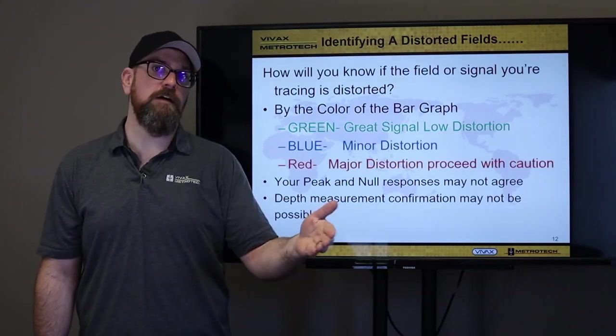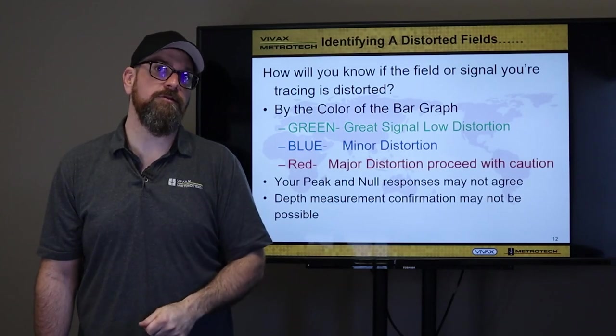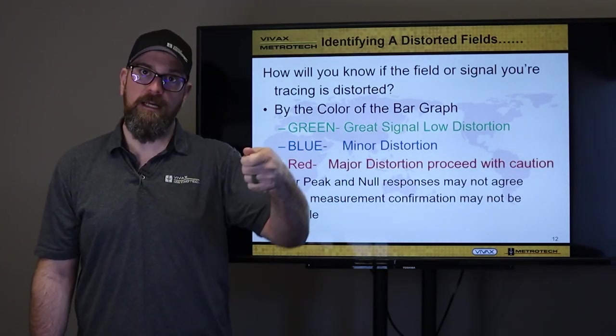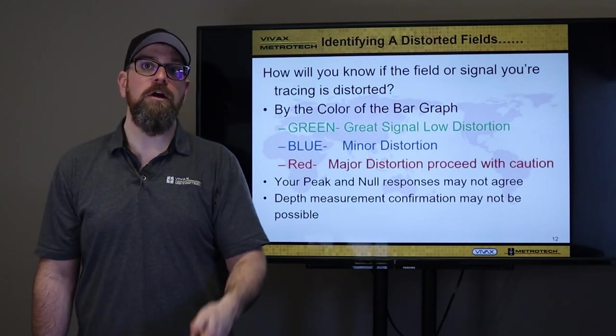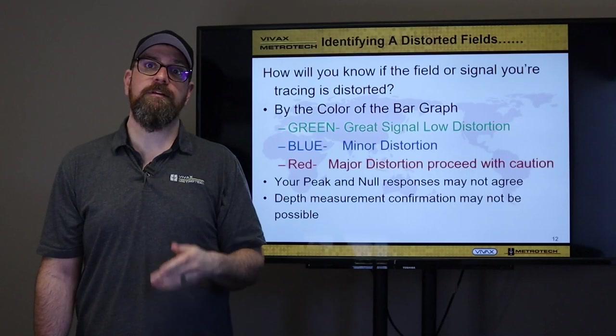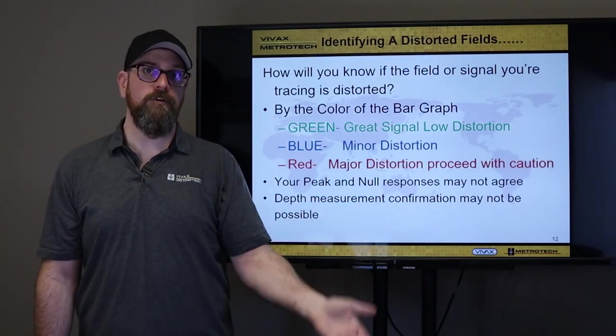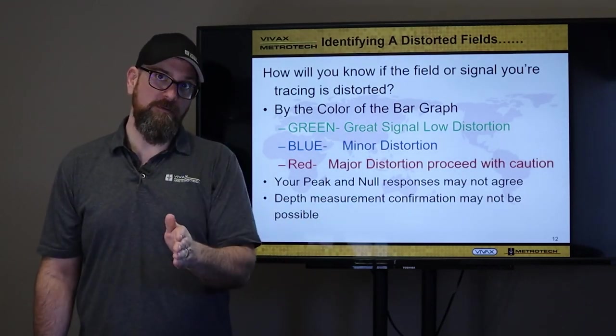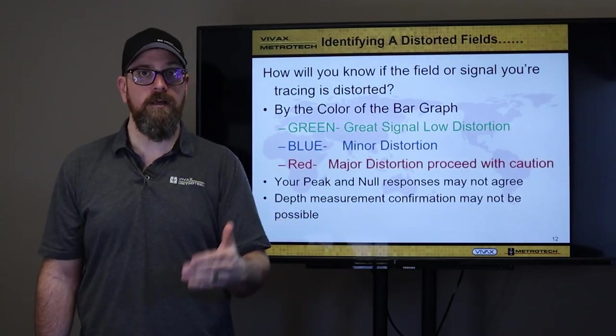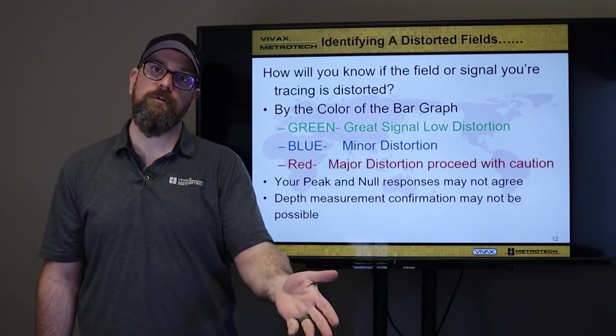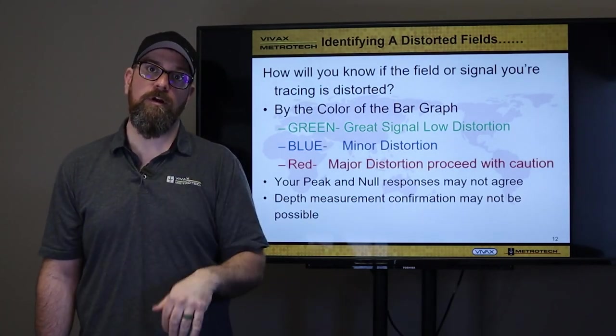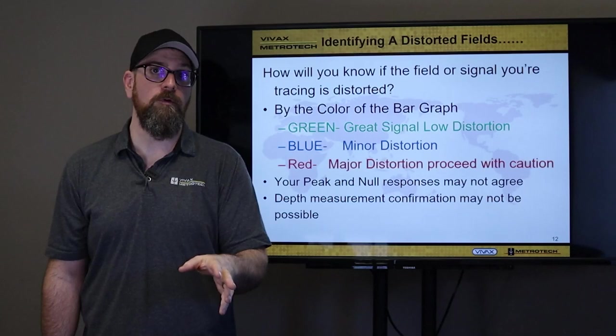With traditional locators, how we go out and determine if we've got distortion on the line, we look at things like our peak and null, and our depth. If I can put the receiver on the ground, raise it up a foot, and it changes by a foot, then that tells me that that is confirmable, and I have low distortion. If I look at where my peak is, and look at where my null is, if both of those agree and line up at the same spot, again, I have low distortion. Higher indication that what I'm looking at is what I actually am connected to, and what I wanna be locating.